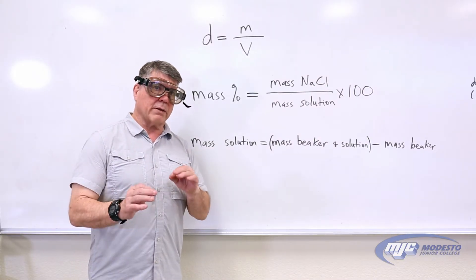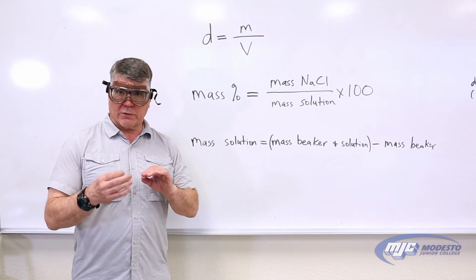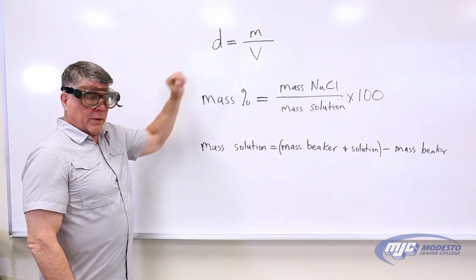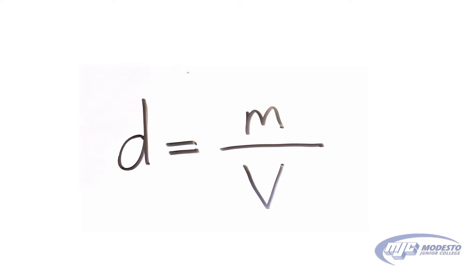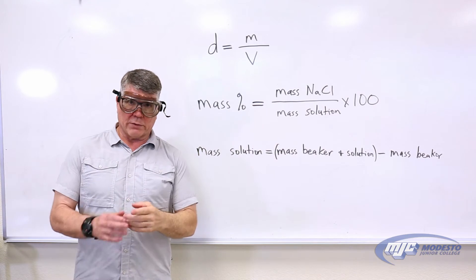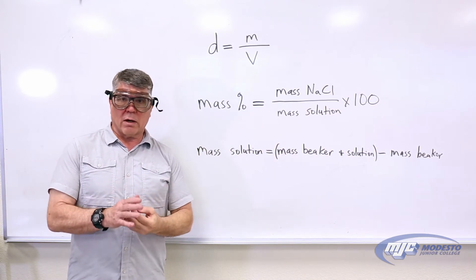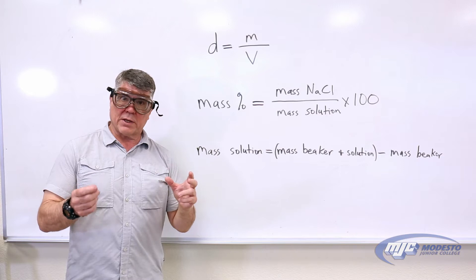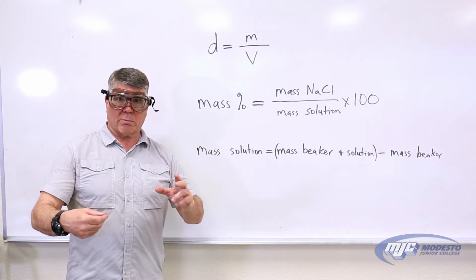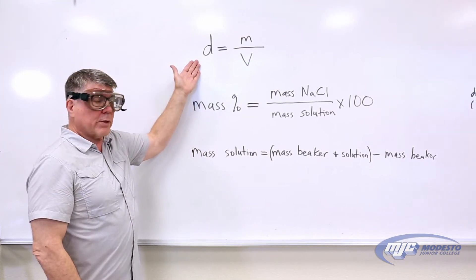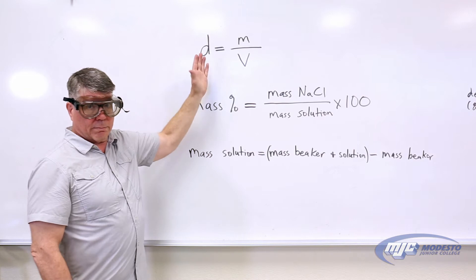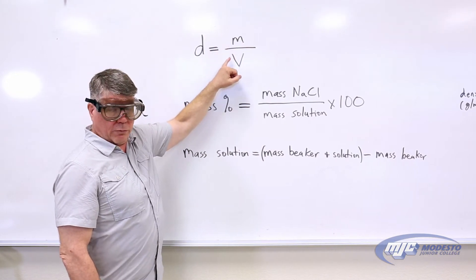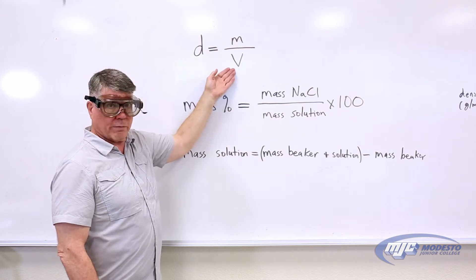So what we're going to look at today is the density and mass percent of sodium chloride in aqueous solutions of sodium chloride. Just starting at the beginning — density is mass over volume. We're going to need to know the density and the mass percent sodium chloride of our five samples made up with deionized water, and then we're going to need to know the density of our unknown to calculate the mass percent sodium chloride in it. To do that we need two things: the mass and the volume — we're going to weigh them and measure the volume.